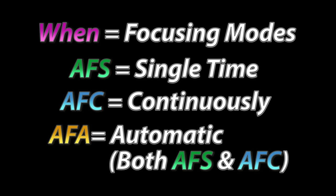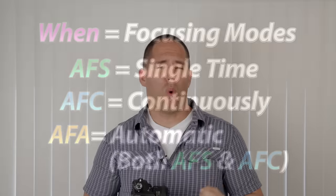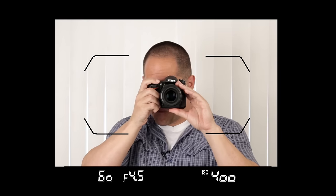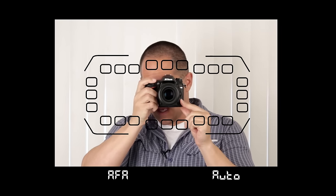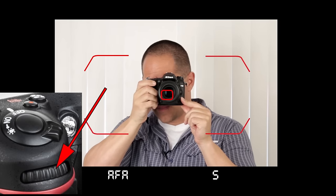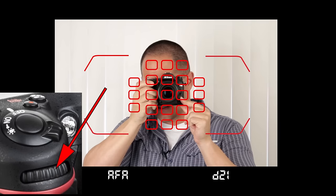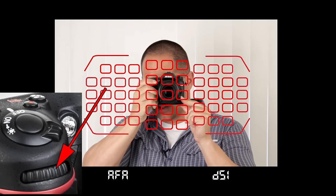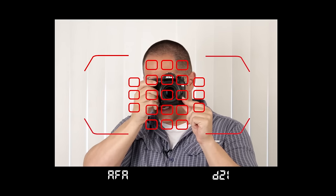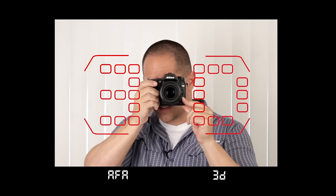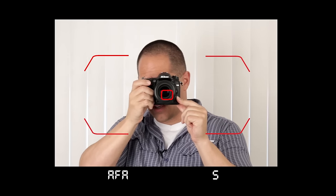Those are your focusing modes. That is when the camera is focusing. Is it going to focus once when you push a shutter button halfway down? Or is it going to focus over and over? Let's talk about the where, the focusing clusters. So let's look through our camera again and we're going to push our autofocus mode button down. What I want you to do this time is to rotate your sub command dial. You're going to see different patterns of focusing squares.